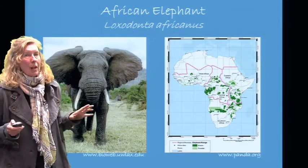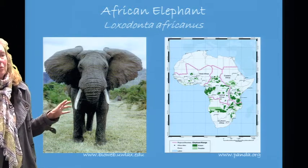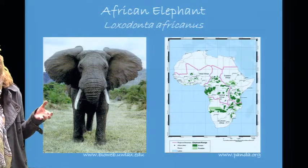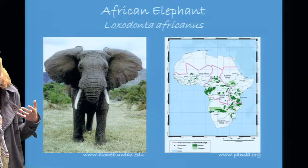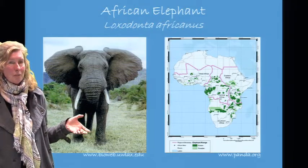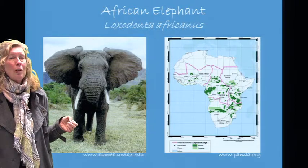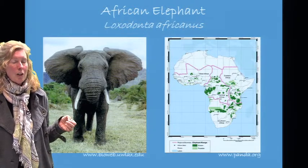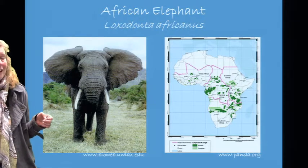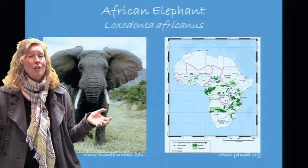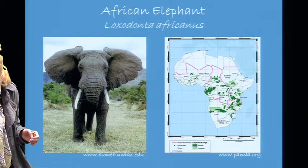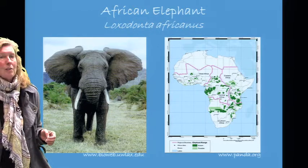The African elephant is a great example of a large-bodied species. A large-bodied species needs a lot of food and energy, and therefore needs a very large distribution. Large-bodied species also tend to be vulnerable to exploitation because they provide a really large target. Currently, the African elephant has been under assault for its ivory tusks.